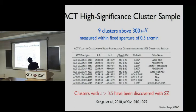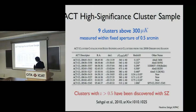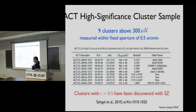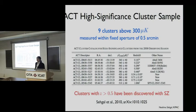Here are our highest-significance clusters — nine of them with a signal above 300 microkelvins. Here is the ACT name, position on the sky, and signal in microkelvins. Here are the redshifts. Notably, all clusters at redshift above 0.5 were all discovered with the SZ effect. One cluster at redshift of 1 was first seen by SPT and followed up, giving us the spectroscopic redshift, and then also seen in our maps. This illustrates the power of SZ surveys: you're finding all the massive clusters, filling in the high-redshift part of the sample.